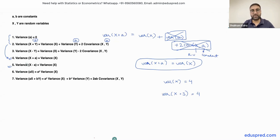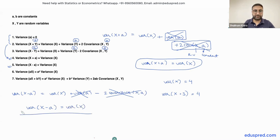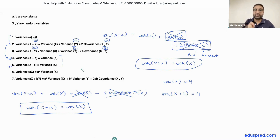Property number 5 is exactly the same idea. Using property 3, variance of x minus a equals variance of x plus variance of a minus 2 times covariance of x and a. Since variance of a is 0 and covariance of x with a is 0, both terms vanish, leaving variance of x minus a equal to variance of x. So whether you add or subtract a constant, the variance does not change.